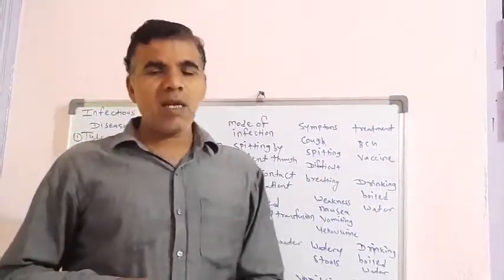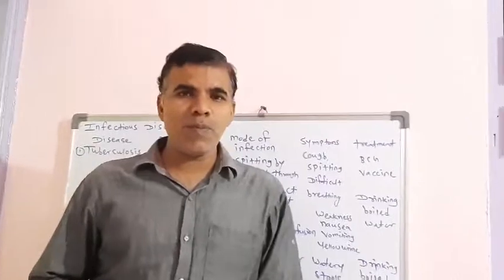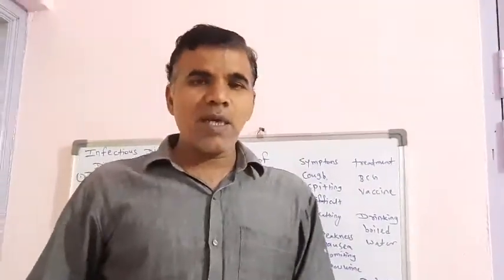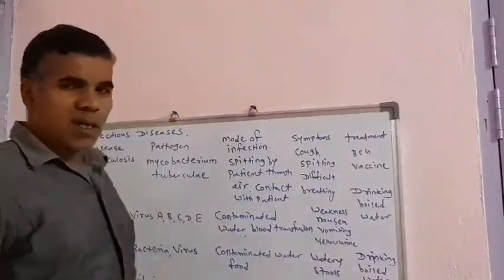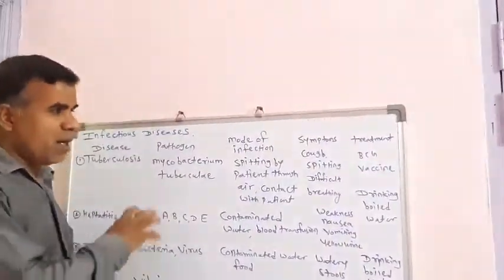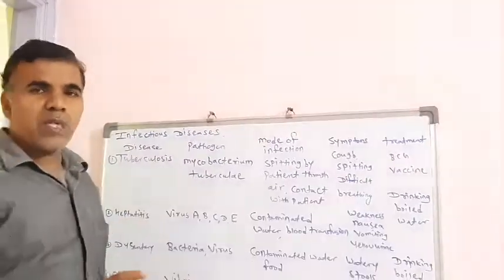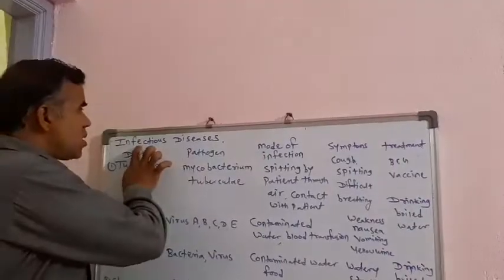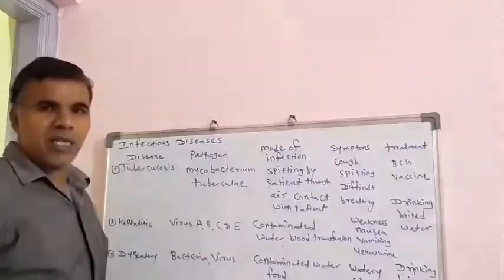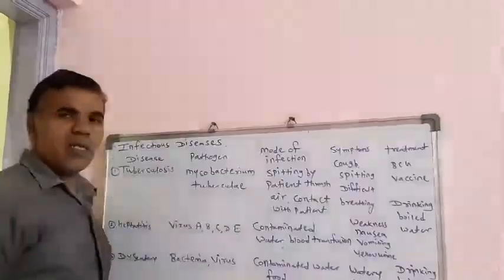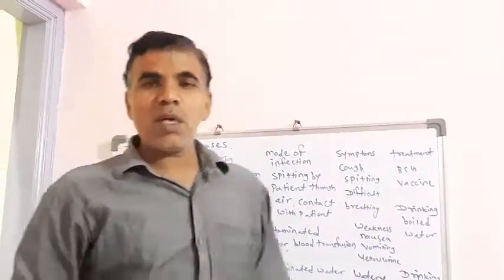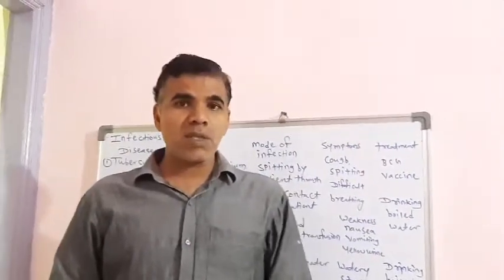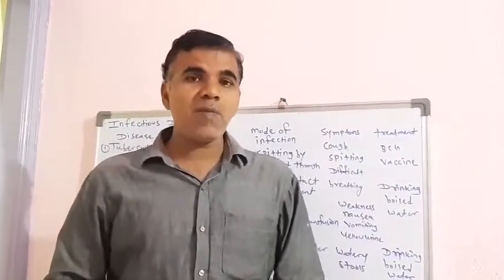Mainly, there are two types of diseases: infectious disease and non-infectious disease. First, we have to understand the infectious diseases. Look at this chart. In this chart, we have given different diseases which are caused by infections of pathogens. Infectious disease means the diseases which spread through the air, water, food, or animals or a person. They are said to be infectious diseases.